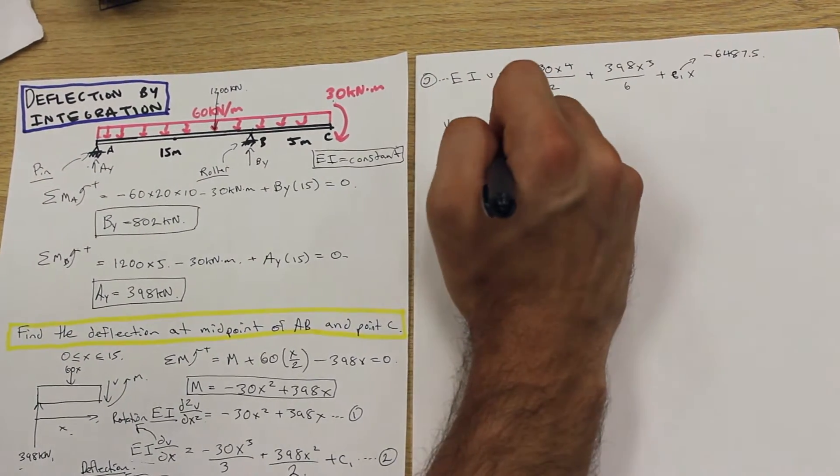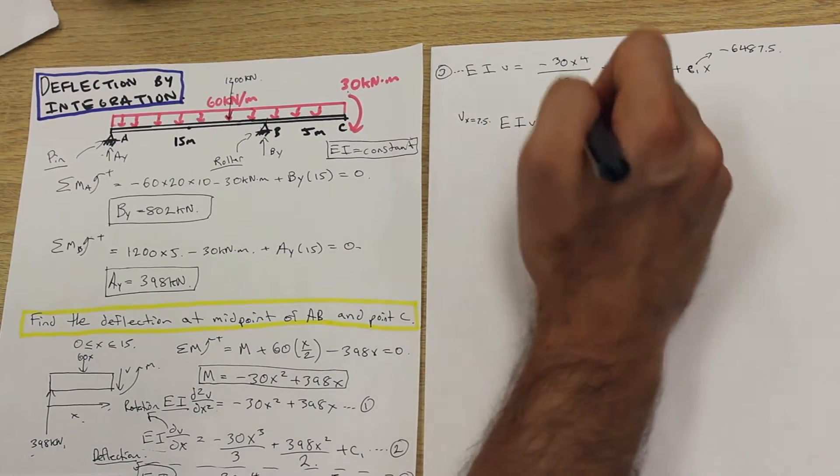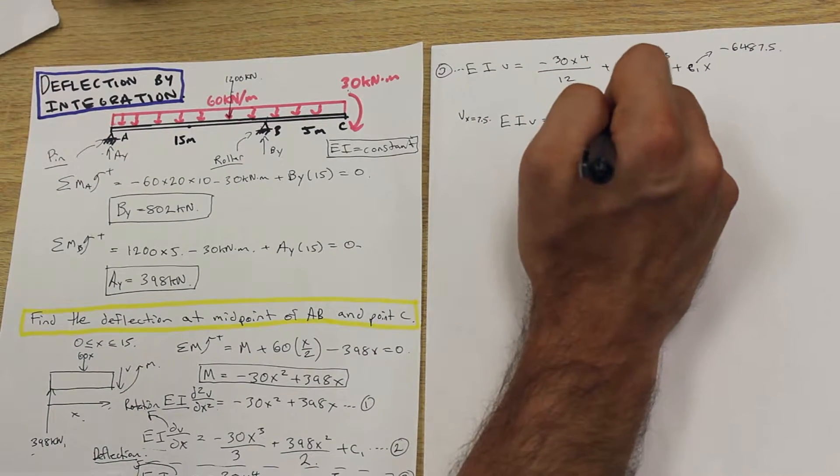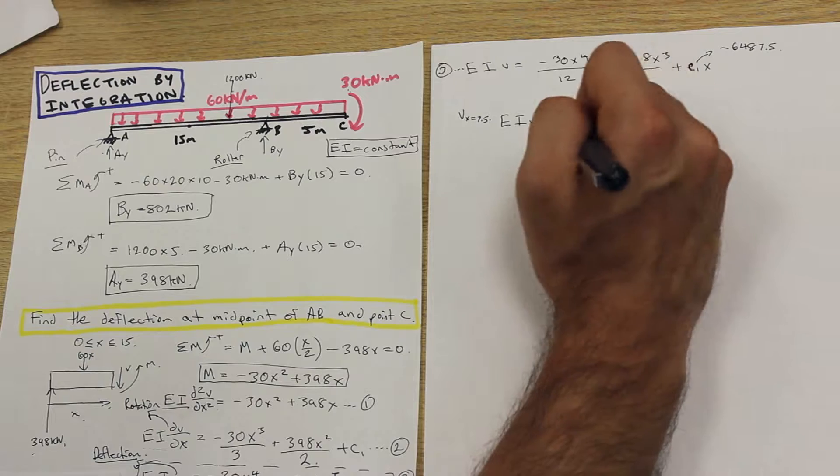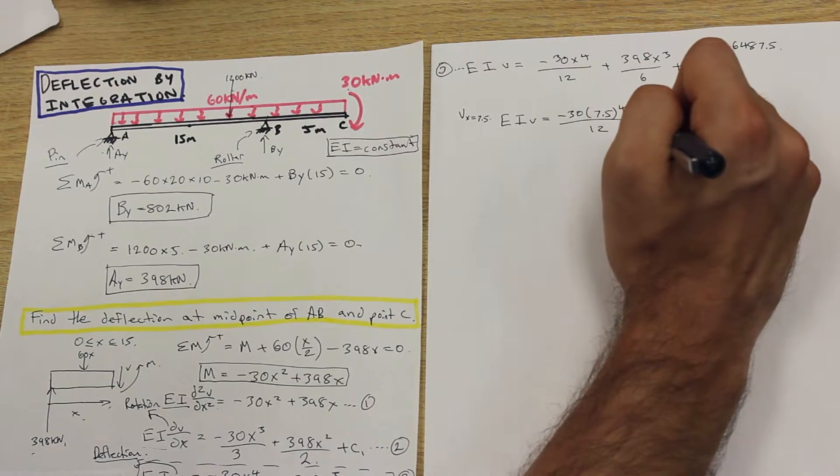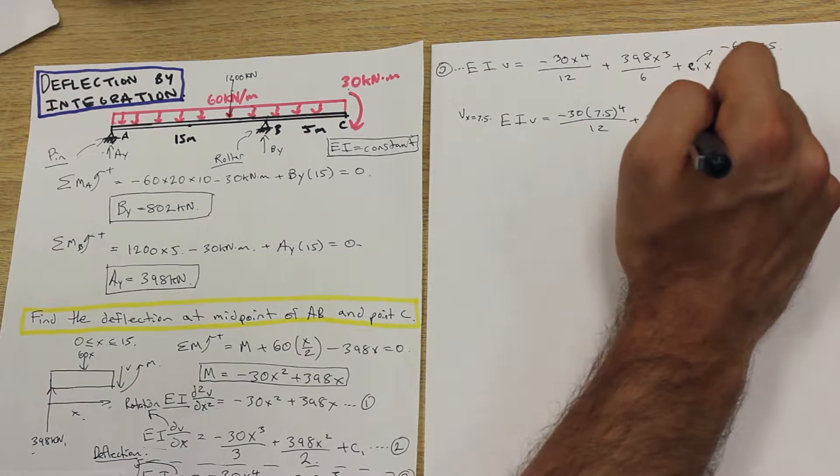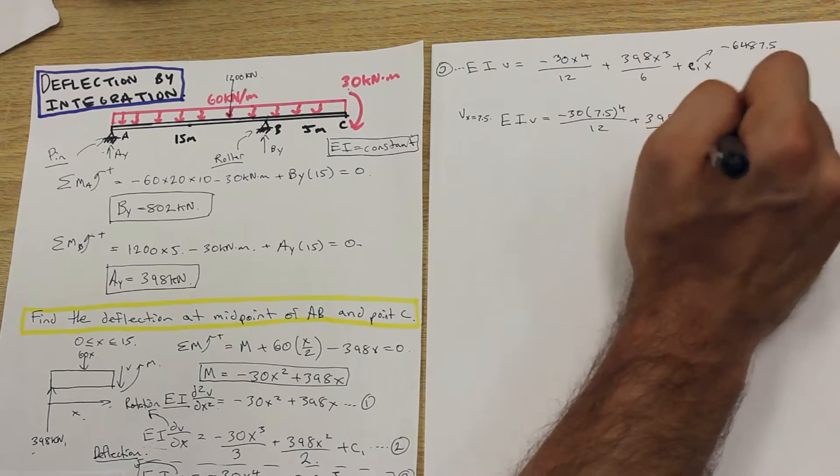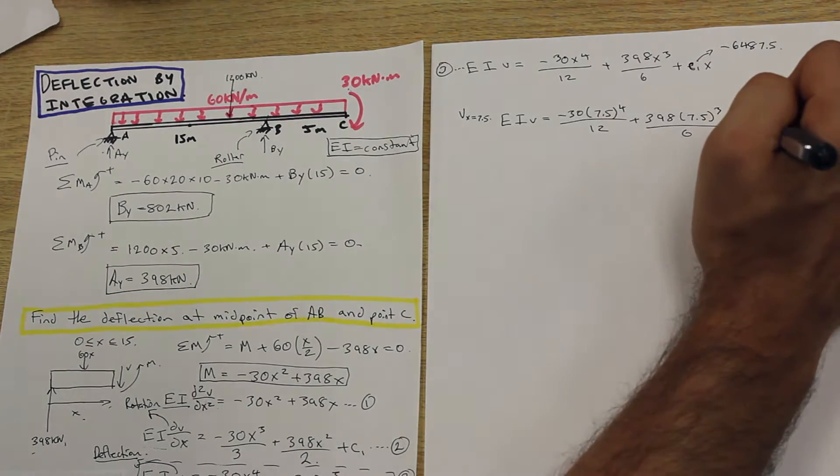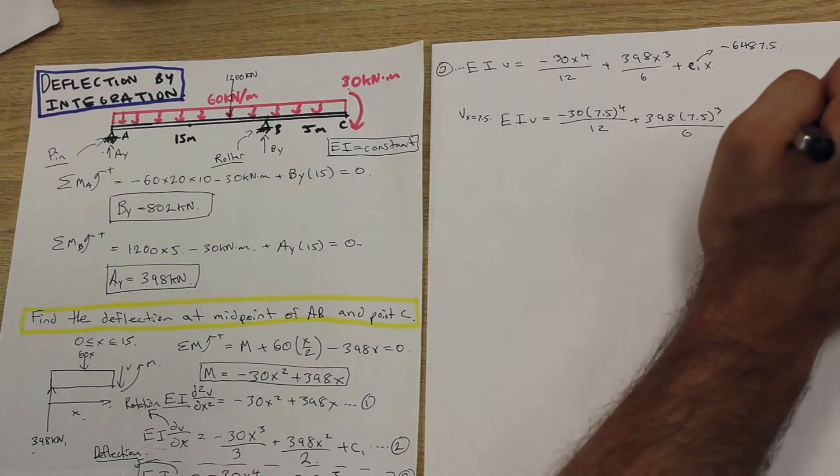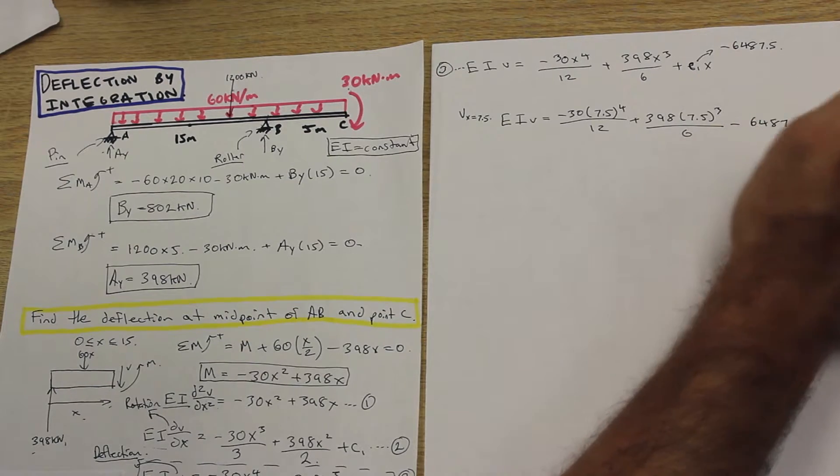We have EIV equals negative 30. We're gonna put in 7.5 here, just plug in our 7.5 into all the X's. To the power of 3 over 6 minus 6,487.5 times 7.5.